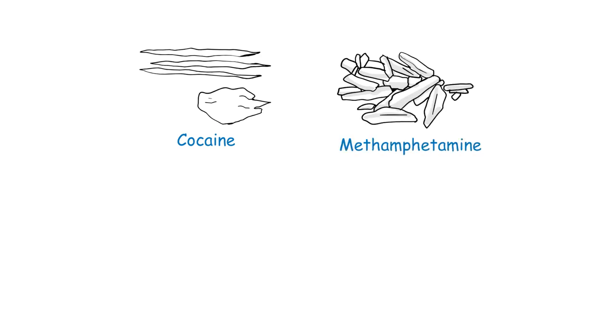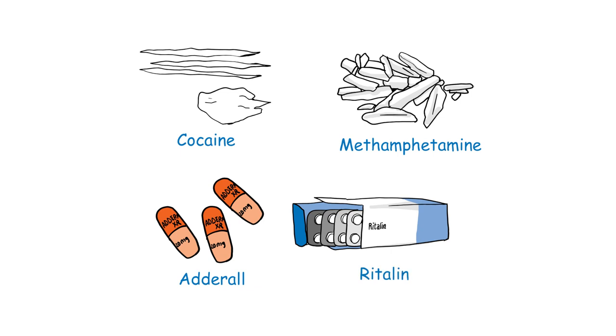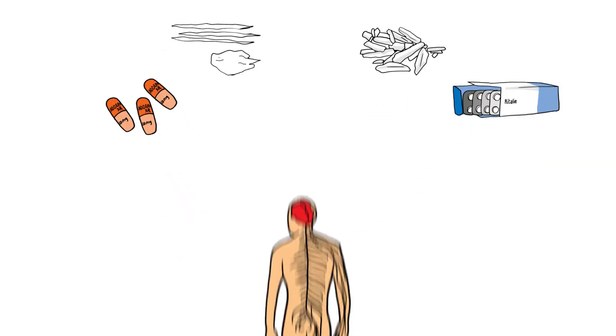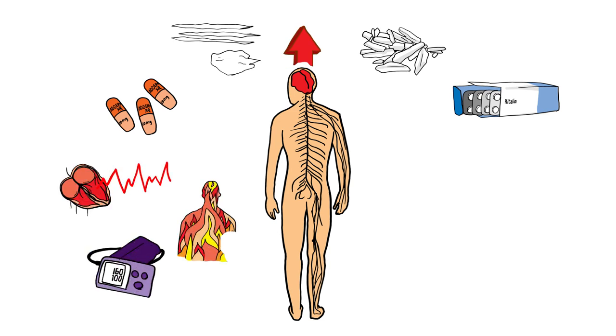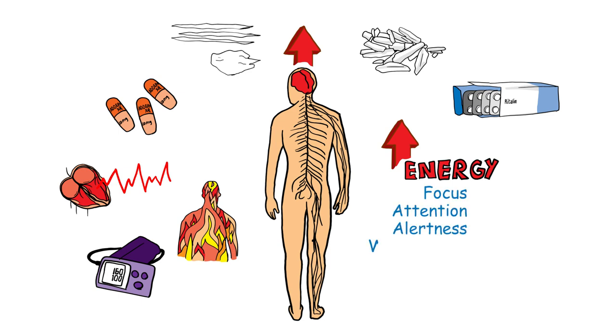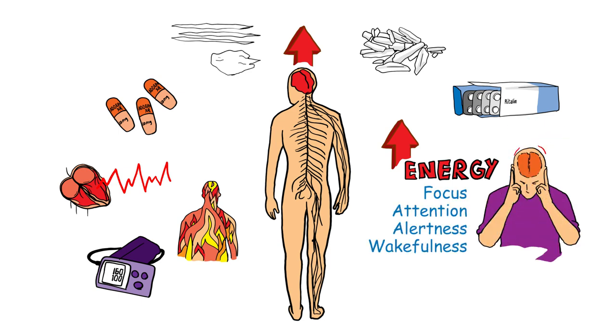Cocaine, methamphetamine, and prescription amphetamines, such as those used to treat ADHD like Adderall and Ritalin, are classified as stimulant drugs. This means that they speed up the central nervous system, increasing heart rate, body temperature, and blood pressure while increasing energy levels, focus, attention, alertness, and wakefulness. They also suppress appetite.